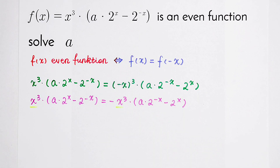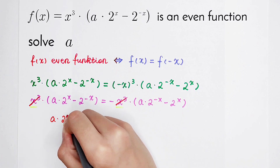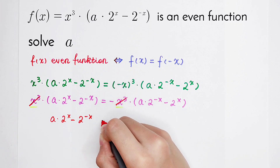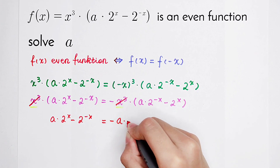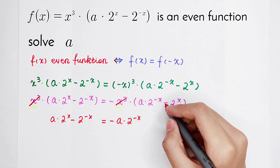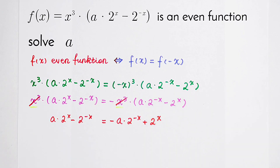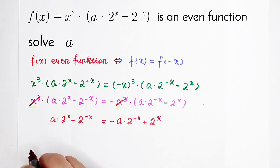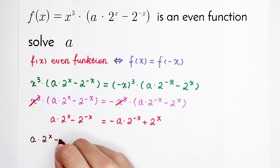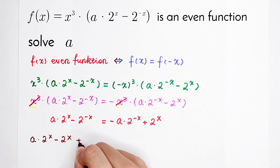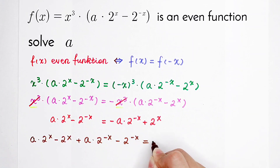Here we have x cubed on both sides, and they cancel each other. So we get: a times 2 to the power x, minus 2 to the power minus x, is equal to — from the right side with the negative sign distributed — minus a times 2 to the power x, plus 2 to the power x. Moving terms to the left side: a times 2 to the power x, minus 2 to the power x, plus a times 2 to the power minus x, minus 2 to the power minus x, is equal to zero.